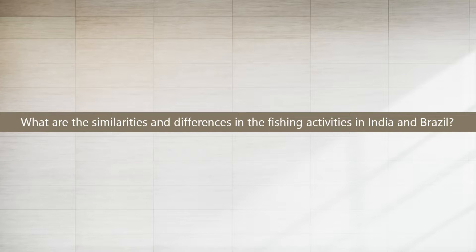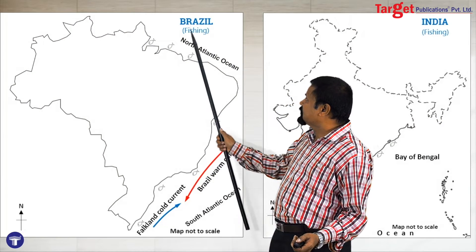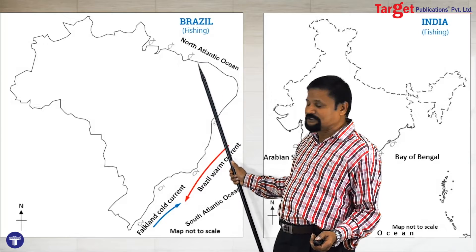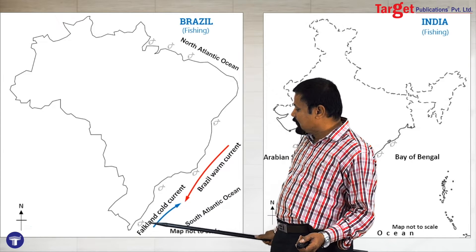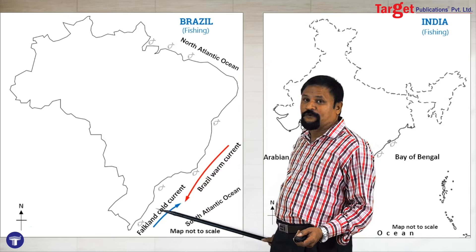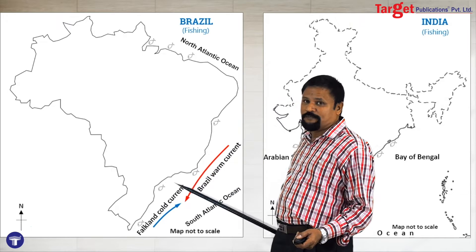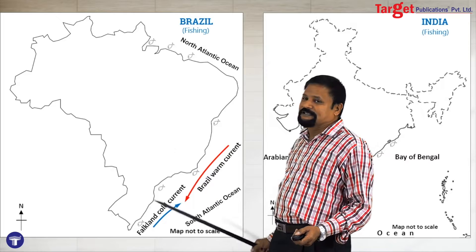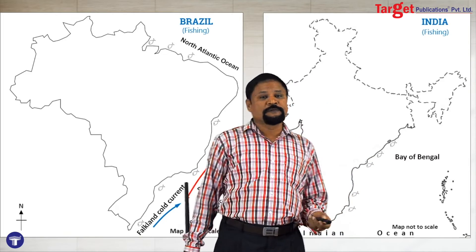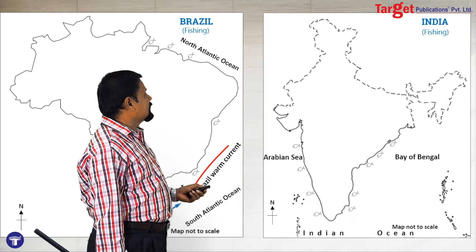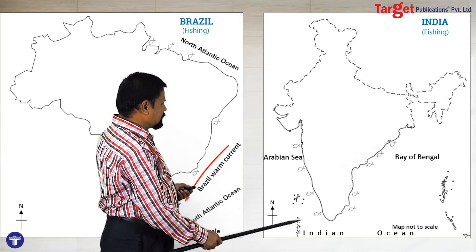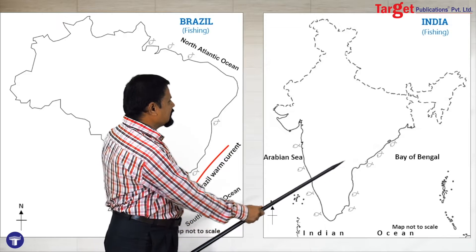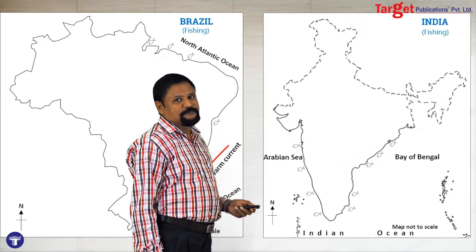Next is the similarities and differences in fishing activities of India and Brazil. For Brazil, show the North Atlantic Ocean as one of the major fishing grounds, and the South Atlantic Ocean as another important fishing ground — two currents meet here, the Falkland cold current and the Brazil warm current, making it a major fishing ground. The same way you can show the Indian fishing grounds: the Arabian Sea, Bay of Bengal, and Indian Ocean.